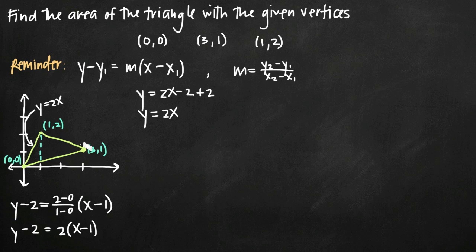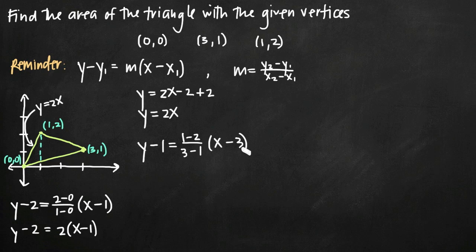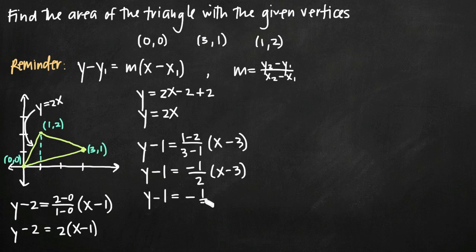Now let's find the equation of the line between (1,2) and (3,1). Using (3,1) as our point, the slope is (1−2)/(3−1) = −1/2. So y − 1 = −½(x − 3), which simplifies to y = −½x + 5/2.